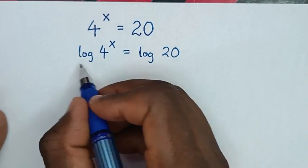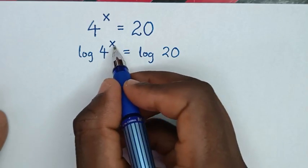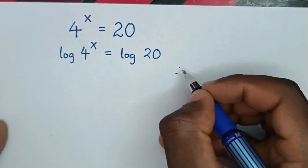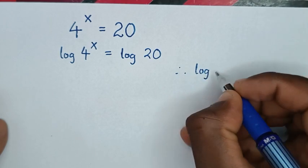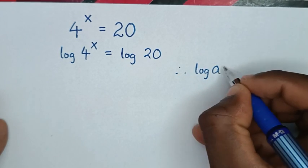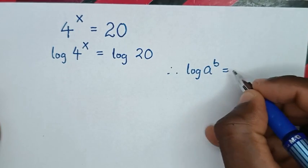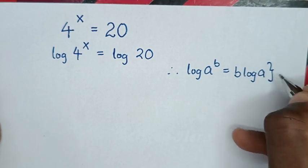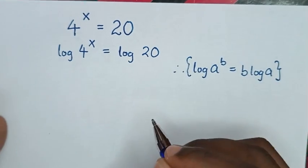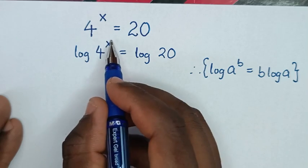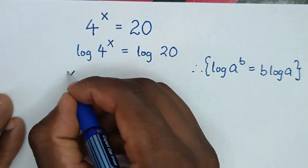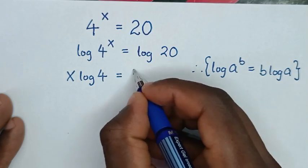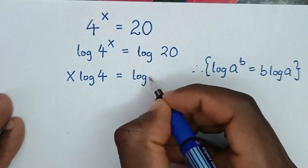Then from here on the left side, log of 4 power x — we'll apply the logarithmic rule. The rule states that log of a to the power of b is equal to b times log of a. So this power of x will move to the front, giving us x times log of 4 is equal to log of 20.